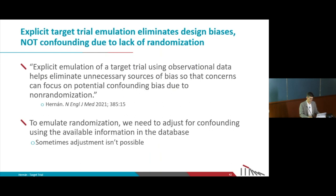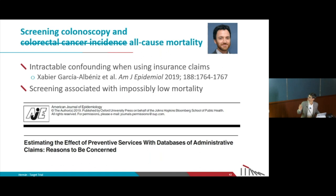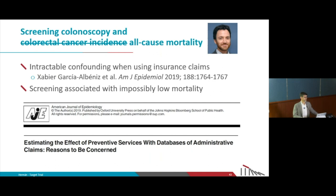Let me give an example of where target trial emulation doesn't work. Going back to the study of screening colonoscopy — if rather than using colorectal cancer incidence as the outcome, we use total mortality — we find a completely biased effect estimate where it looks like screening colonoscopy lowers mortality risk by six percentage points or so. That's just not possible, because even if screening colonoscopy could prevent all colorectal cancers, colorectal cancer accounts for only about 0.5% of deaths.